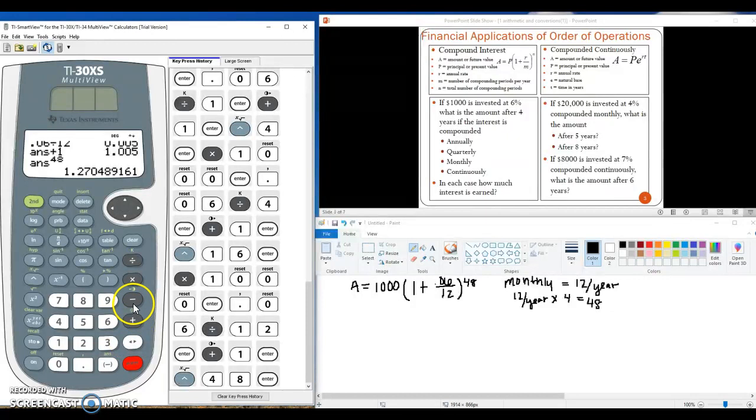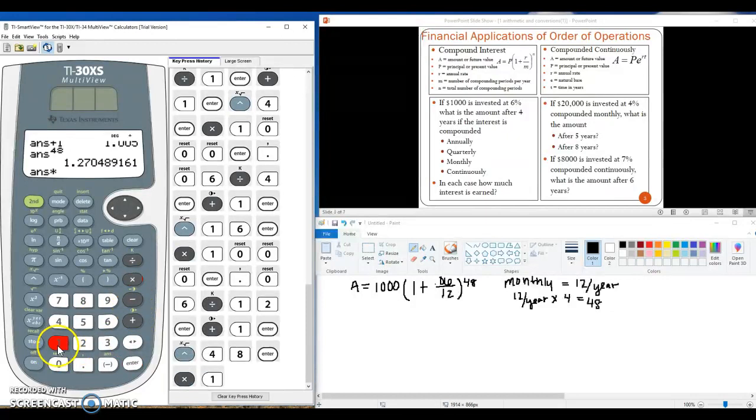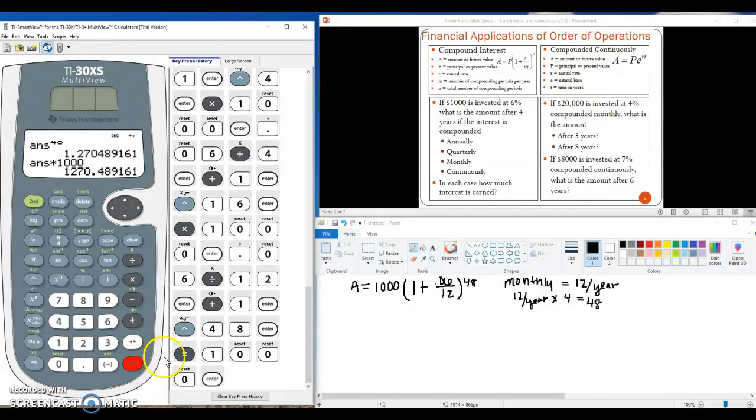And finally we multiply by 1,000. And we get our amount here is $1,270.49. Our interest on that amount is $270.49.